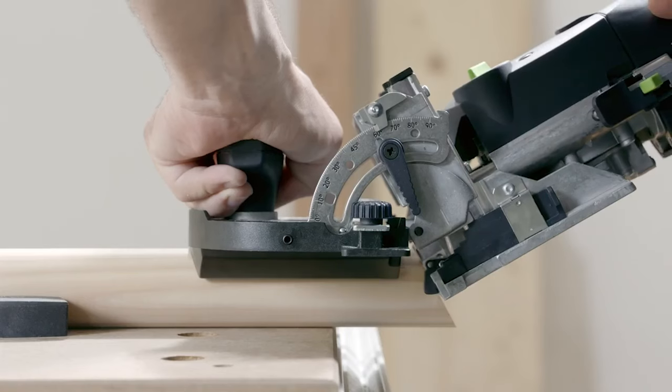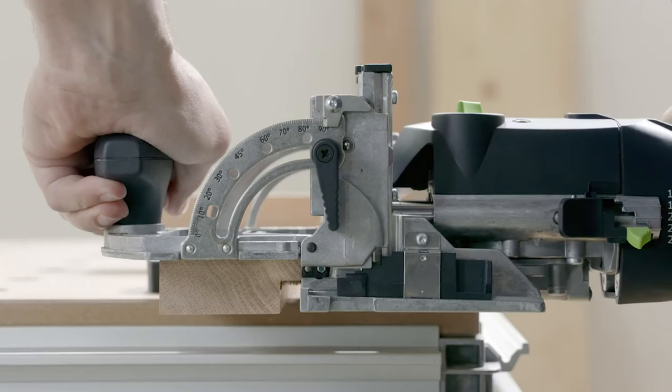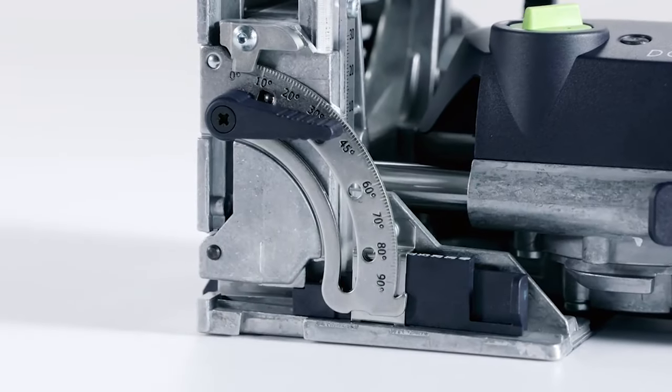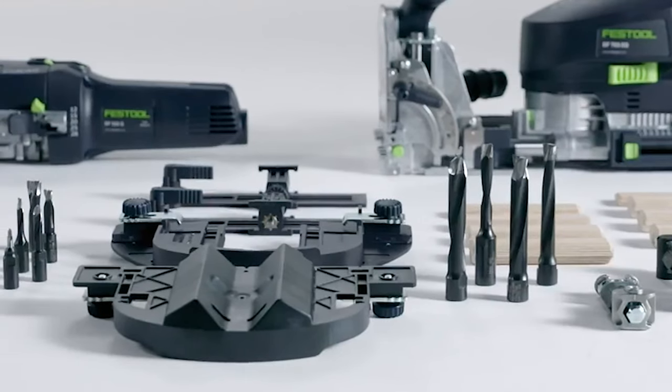The DF500 Domino Joiner is used to make sturdy joins quickly and has a range of accessories to make normal time-consuming applications faster and easier. In this guide we'll take a look at the different features, setup and system accessories.